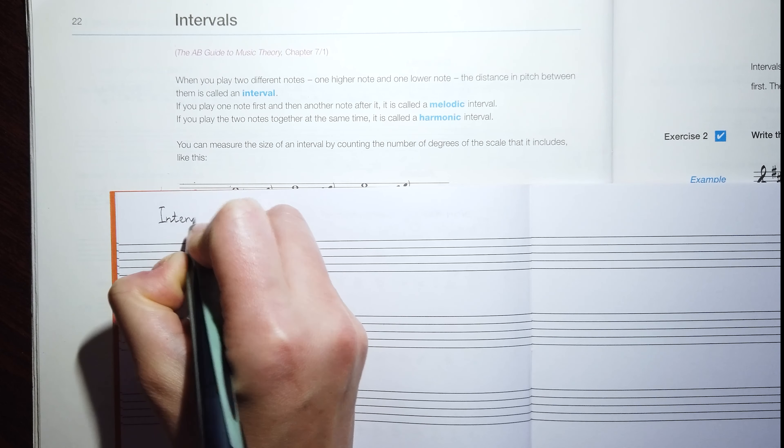For example, we have F and C, and the distance between them from F to C, we gradually count one, two, three, four, five. We have the interval here, a fifth. Another one, F and G, for example—F and G are two neighbor notes, and the distance between them is a second.